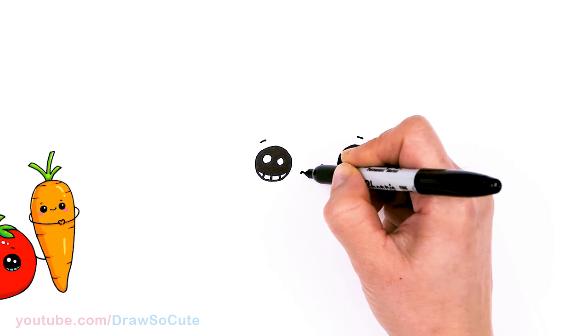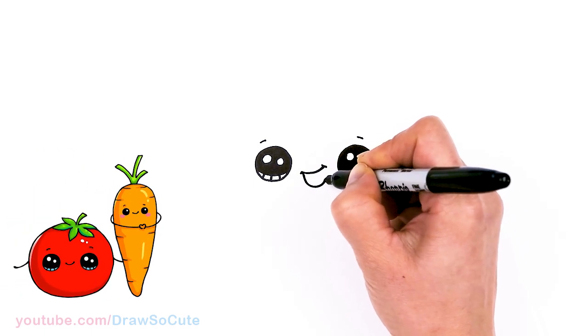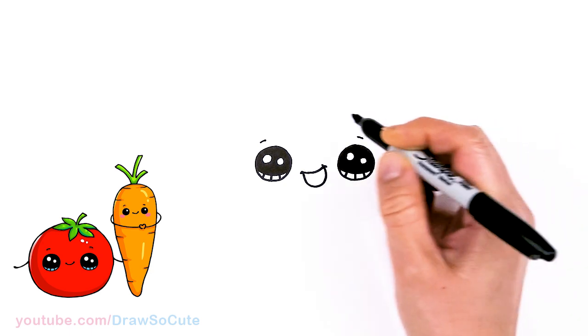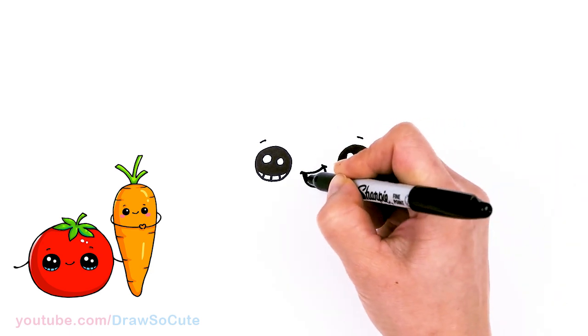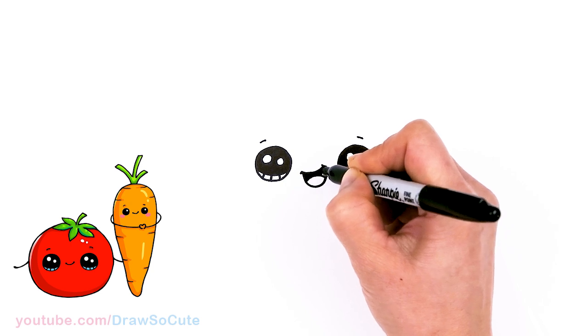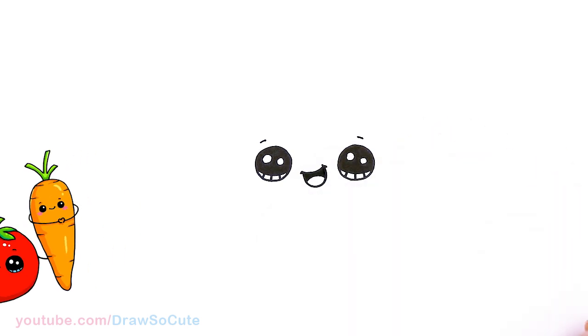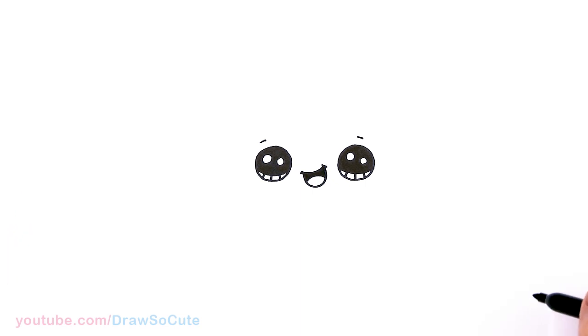And then we're gonna add a U right at the bottom. And then right here just add a little tongue. I'll just go ahead and shade this part in so you can see a little bit better. Now we have a very happy cauliflower, right?